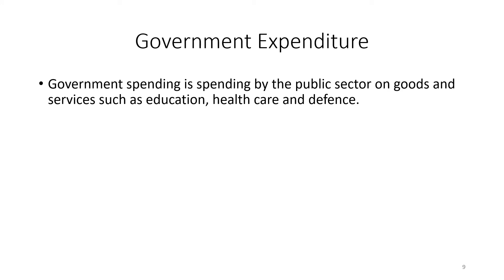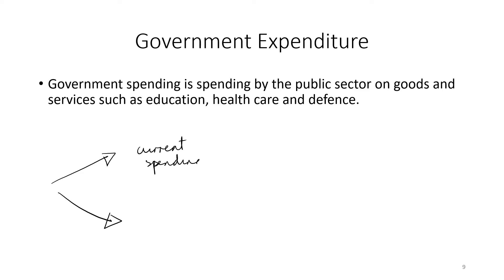Let's now look at government expenditure. Government expenditure is spending by the public sector — in other words, the state — on goods and services such as education, healthcare, and defence. Government expenditure can be split into two types: current spending and capital spending.